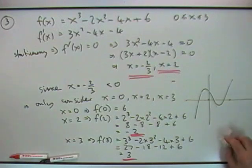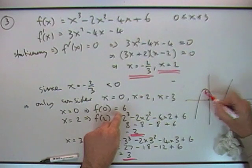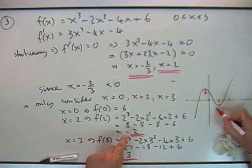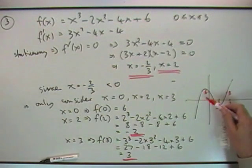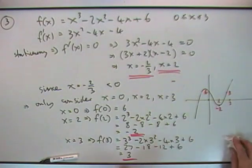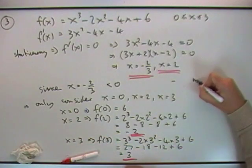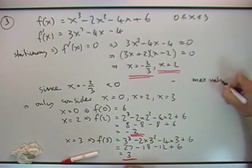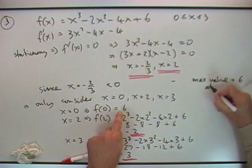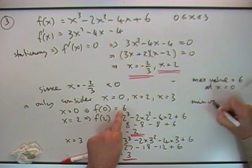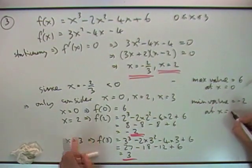I'll just indicate them on this sketch. At 0, the answer was 6. At 2, the value was negative 2. And at 3, the value was 3. So there's our winner 6 and there's our lowest negative 2. So the final answer to the question is: the maximum value was 6 at x equals 0, the minimum value was negative 2 at x equals 2.